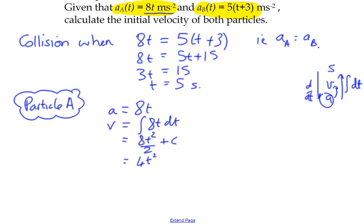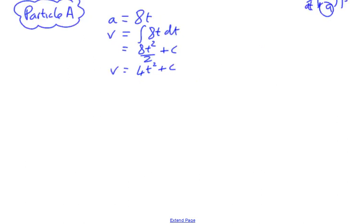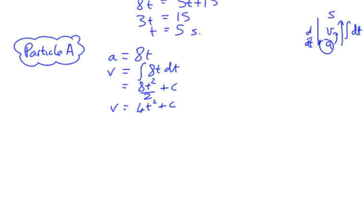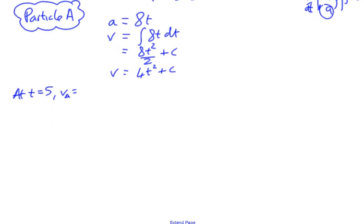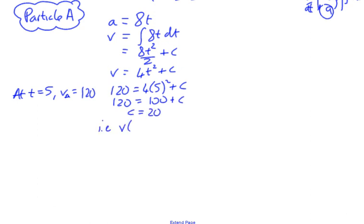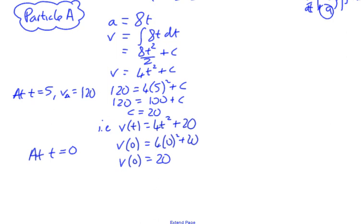Integrating gives us 4t squared plus c — a general function — but we need additional information to work out that constant. We don't know the initial conditions, but we do know that at the collision at t equals five seconds, the velocity of A was 120 meters per second. Substituting that in, we find that c equals 20, so our velocity function is 4t squared plus 20. For the initial velocity we substitute t equals zero and get 20 meters per second for particle A.